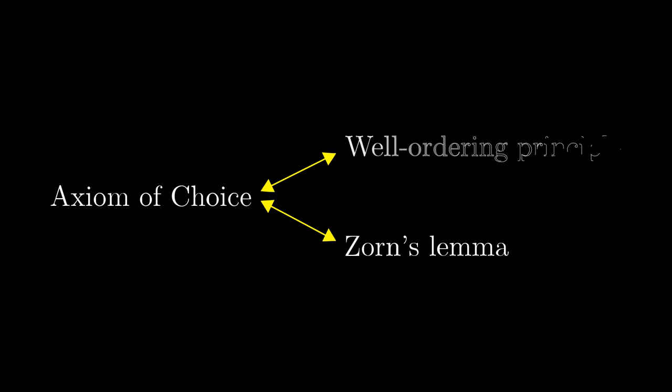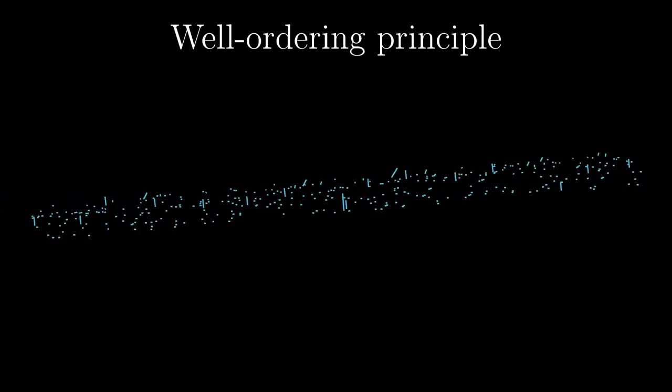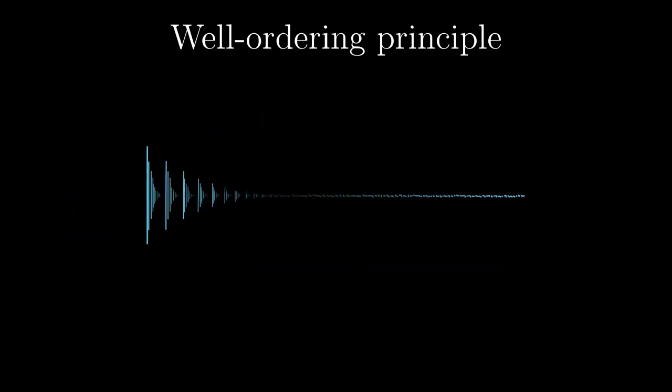Next to Zorn's lemma, there is another popular equivalent of the axiom of choice: the well-ordering principle. Let's look at it briefly at the end of this chapter. The well-ordering principle states that we can arrange the elements of any set to obtain a well-ordered set. For example, real numbers are not well-ordered, but we could rearrange them so that they would be.